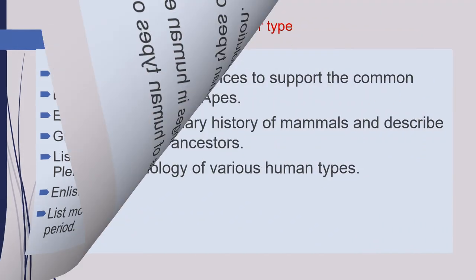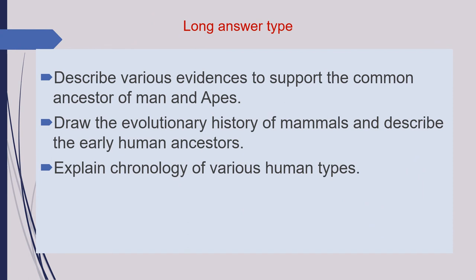The third category of questions are long answer questions. The first question is: describe various evidences to support a common ancestor of man and apes. Second question is: draw the evolutionary history of mammals and describe the early human ancestors. The last question is: explain the chronology of various human types.